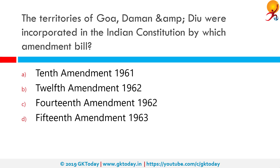The territories of Goa, Daman and Diu were incorporated in the Indian Constitution by which amendment bill? The correct answer is the 12th Amendment 1962. The 12th Amendment of the Constitution of India, officially known as the Constitution 12th Amendment Act 1962, incorporated Goa, Daman and Diu as the 8th union territory of India by amending the 1st schedule to the Constitution of India. India acquired control of Goa, Daman and Diu from Portugal in December 1961.